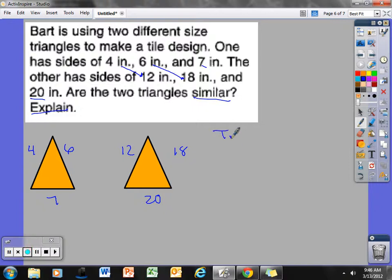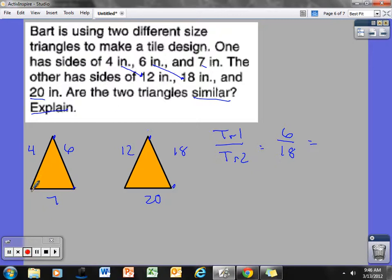I'm comparing triangle 1 to triangle 2. Let's use 6 over 18. Triangle 1, we have 6 over 18, because this side corresponds to the side that is 18. That should be equal to 7 for triangle 1 over the corresponding side is 20. I now do my cross products and see if these equal each other. 18 times 7 is equal to 126. Does 126 equal 20 times 6, which is 120? These do not equal, so these are not similar triangles.